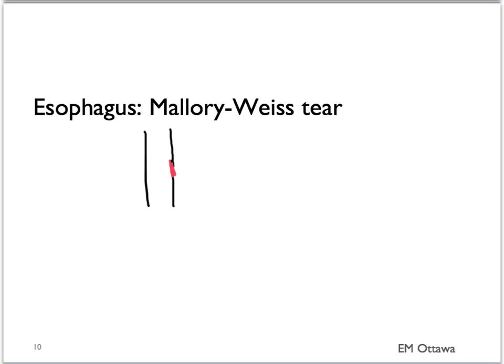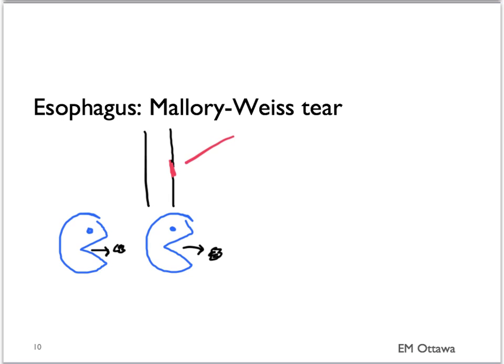It can also be from a Mallory-Weiss tear. A Mallory-Weiss tear occurs after repeated episodes of vomiting. During the repeated episodes of vomiting, a small tear can happen along the esophagus. As a result, the vomit can be streaked with blood. As with esophagitis, blood from a Mallory-Weiss tear tends to be in small quantity.